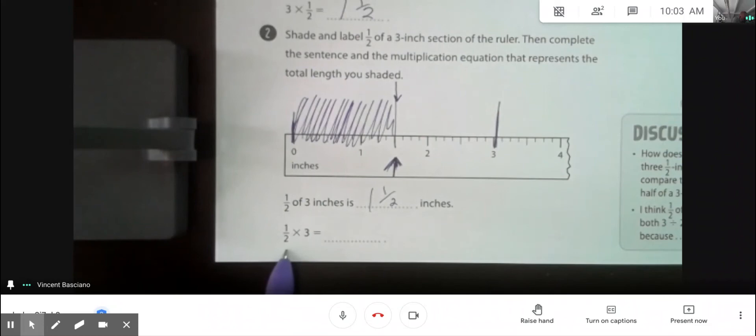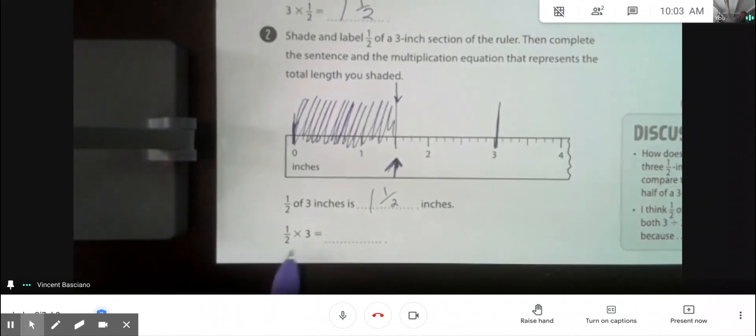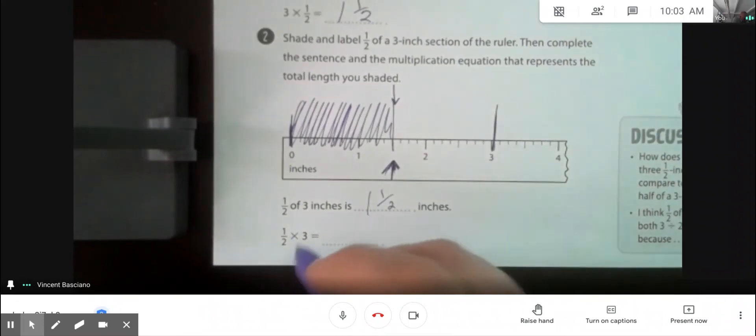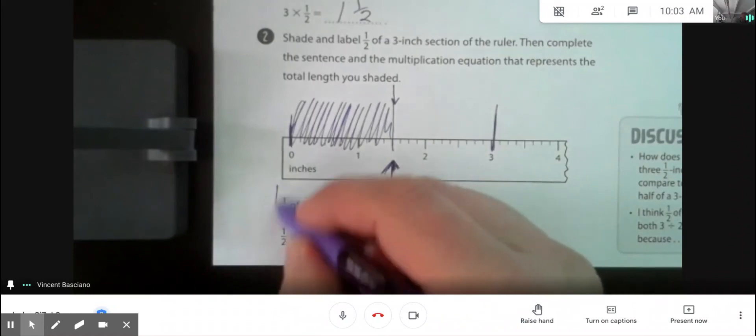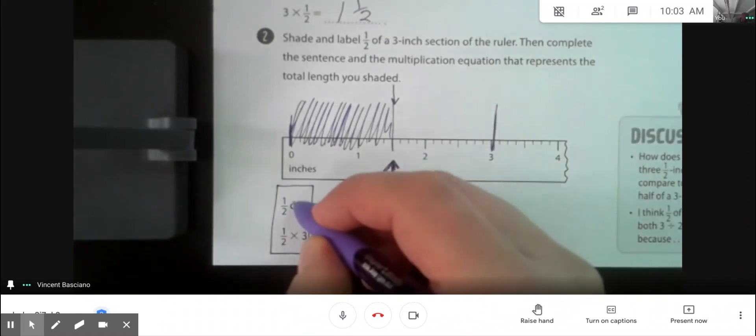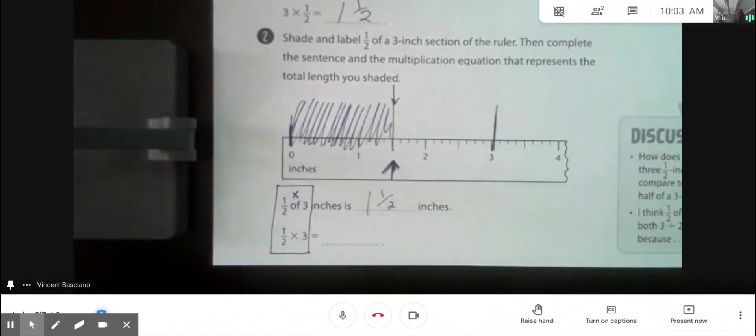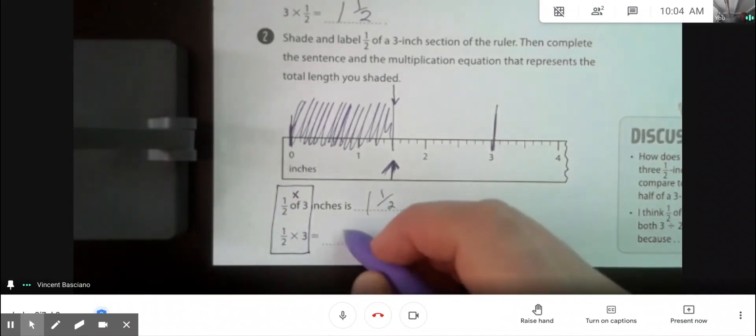And the bottom part is one-half times three, or one-half of three. Okay, I've said this before, but the word of in math always means multiply, right? The word of always means multiply. So one-half of three is one-half times three. One-half times three equals one and one-half.